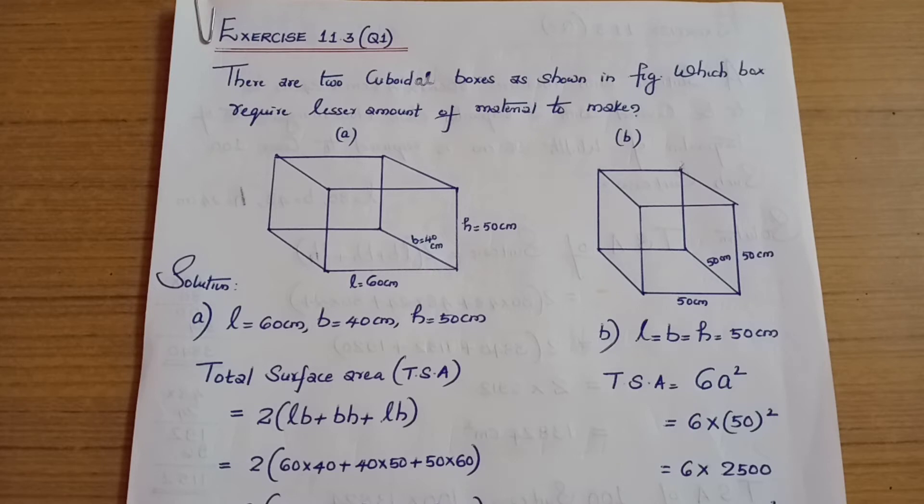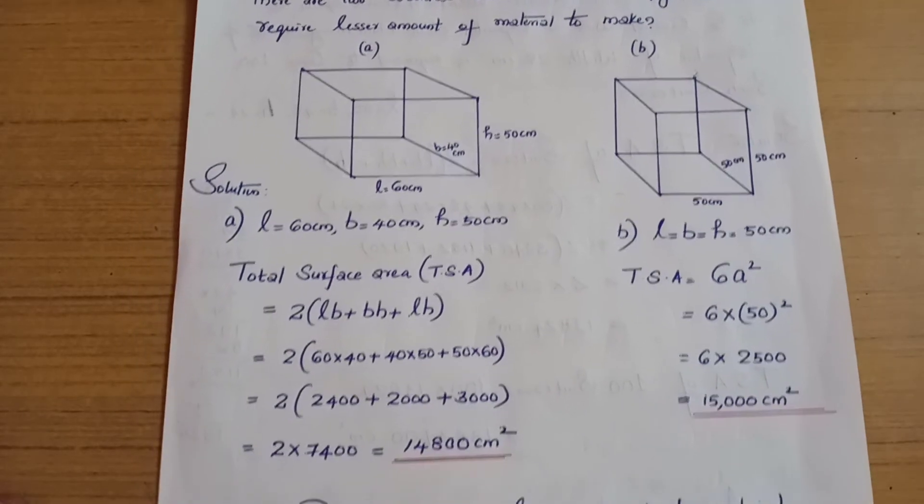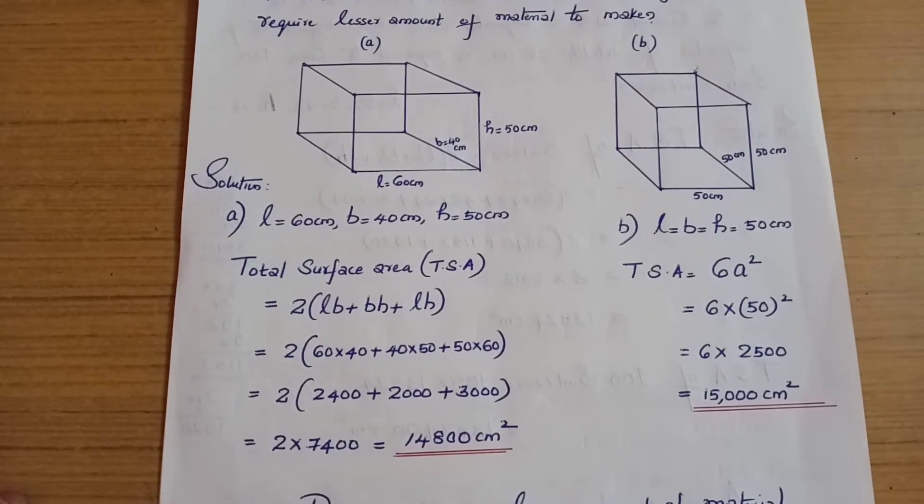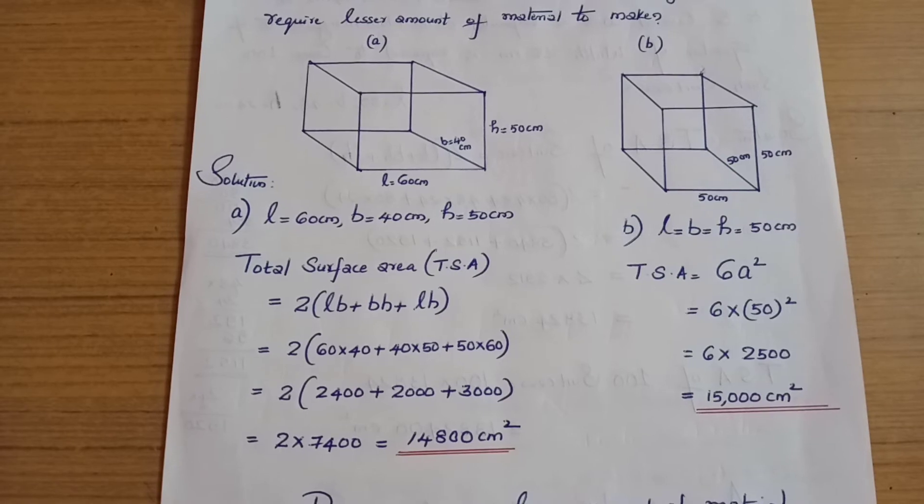For a rectangular box or cuboid, the formula is 2(lb + bh + lh). Total surface area of a cuboid.